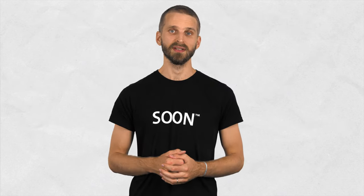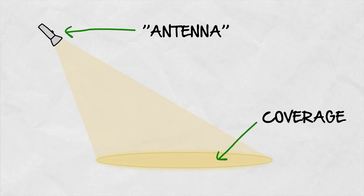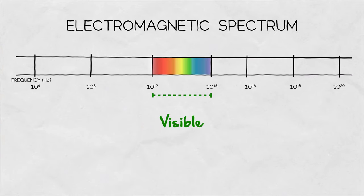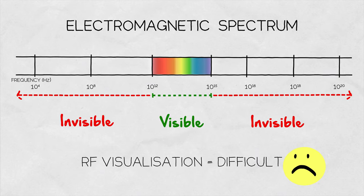A good example of coverage is a flashlight pointed at a surface. It is intuitively clear that the spotlight on the ground is the coverage, and the flashlight can be viewed as an antenna radiating visible light, which is also an electromagnetic wave, just like RF waves, except at much higher frequencies. Besides light, EM waves are invisible to the human eye, making the visualization of RF coverage more difficult.